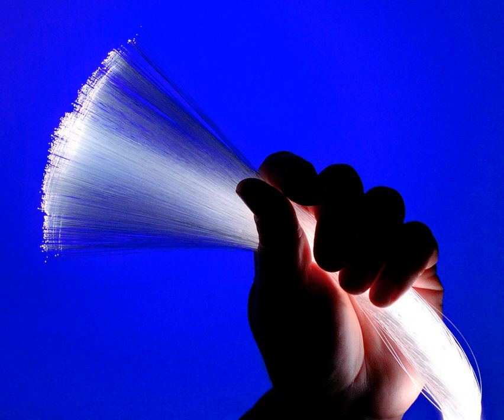The refractive index of fibers varies slightly with the frequency of light, and light sources are not perfectly monochromatic. Modulation of the light source to transmit a signal also slightly widens the frequency band of the transmitted light. This has the effect that, over long distances and at high modulation speeds, the different frequencies of light can take different times to arrive at the receiver, ultimately making the signal impossible to discern, and requiring extra repeaters. This problem can be overcome in a number of ways, including the use of a relatively short length of fiber that has the opposite refractive index gradient.